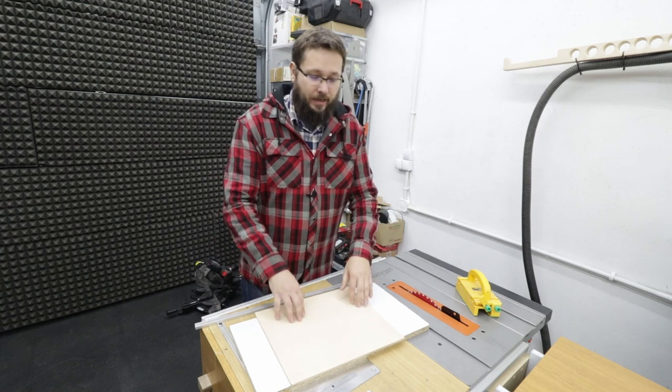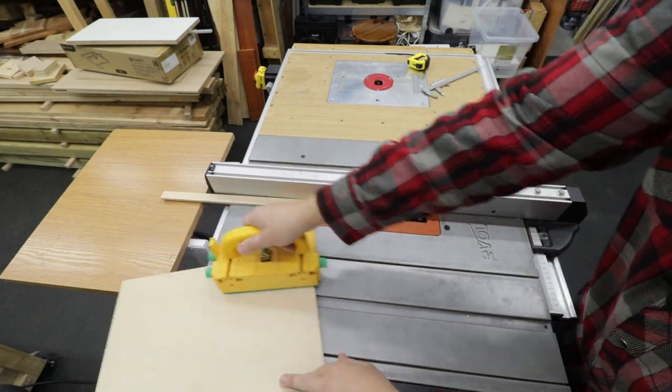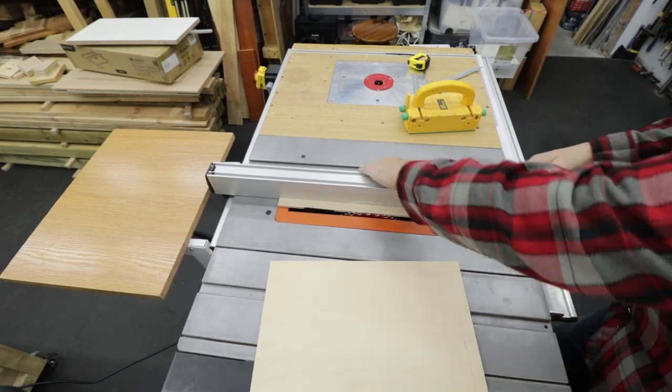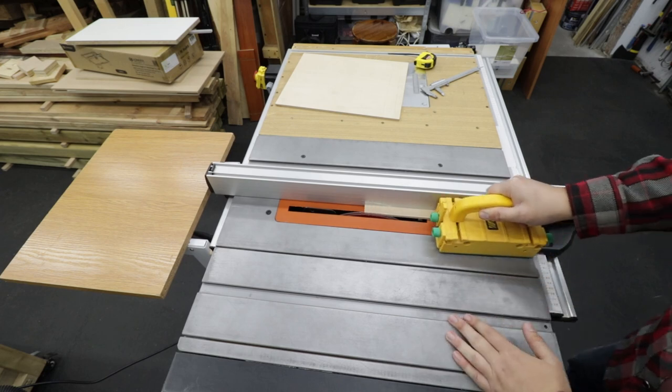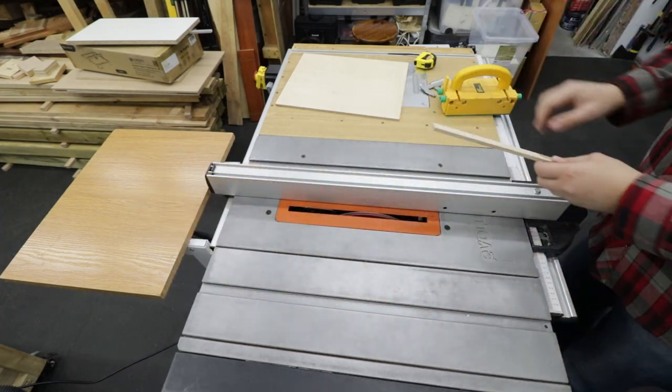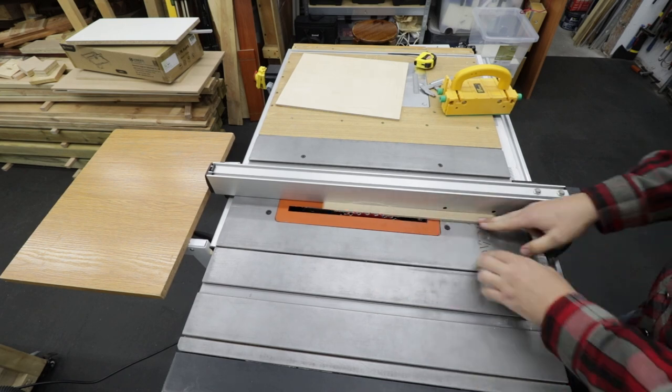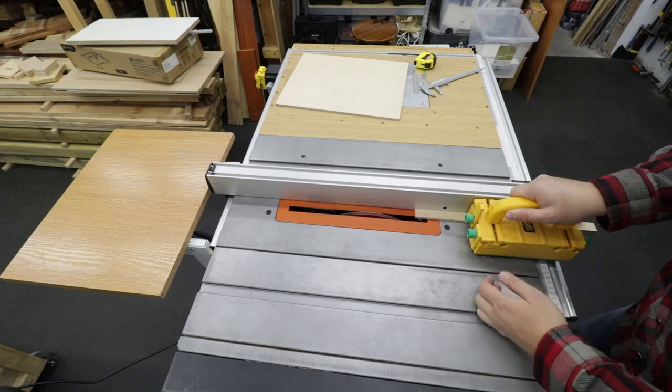So first of all, let's make the runners. Now my miter slots are in a very awkward shape and size. I've measured them and they came out about 19 and a half millimeters wide, so I'm gonna do just over 20 millimeters for the first cut and then I'm just gonna sneak up on the cut until I get a perfect fit in the miter slot.